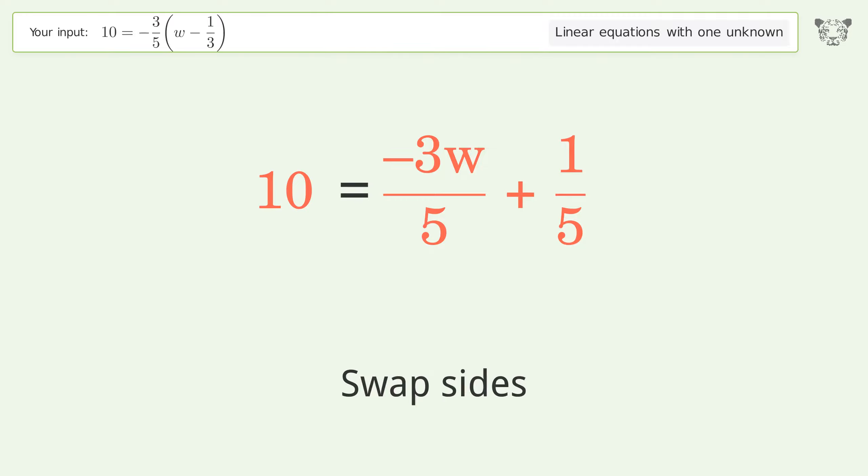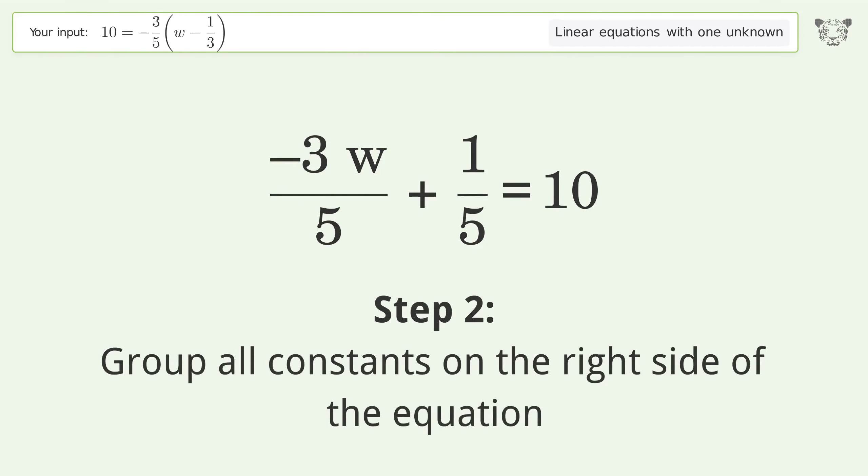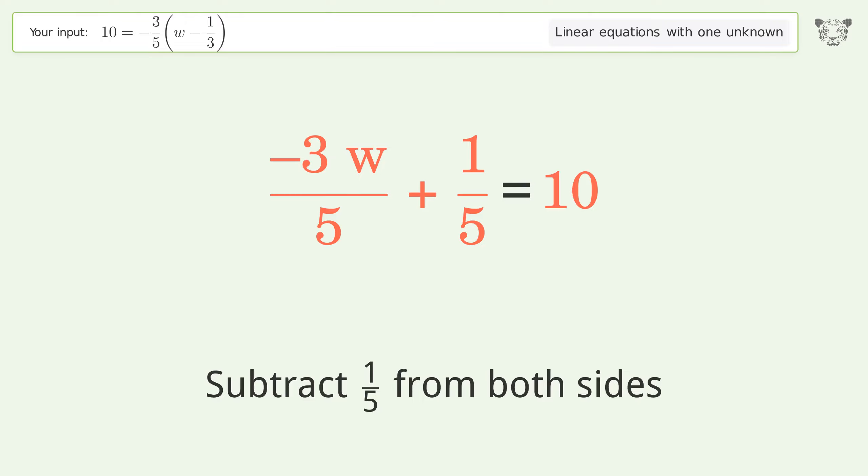Swap sides. Group all constants on the right side of the equation. Subtract 1 over 5 from both sides.